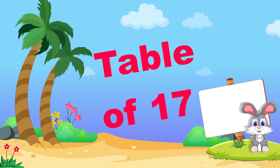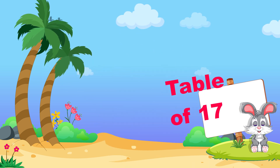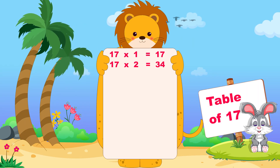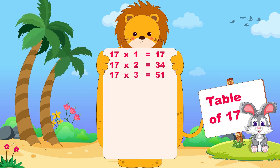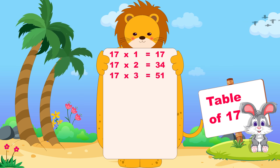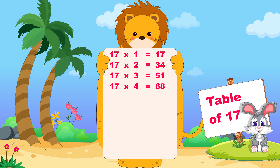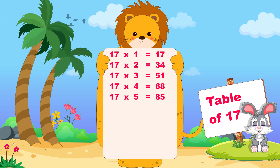Let's learn now table of seventeen. Seventeen ones are seventeen, seventeen twos are thirty-four, seventeen threes are fifty-one, seventeen fours are sixty-eight, seventeen fives are eighty-five.